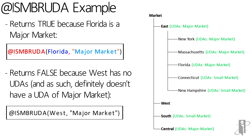If I instead said isMemberUDA, West, "major market", that's going to return a false because West actually doesn't have any UDAs, therefore it definitely doesn't have a UDA of major market.